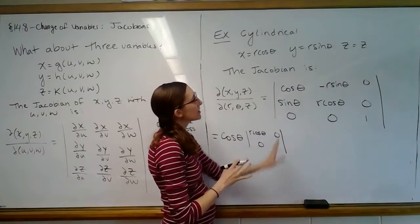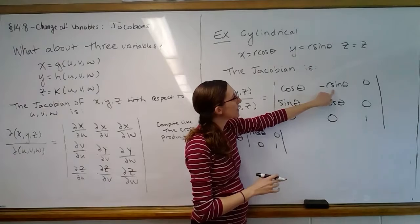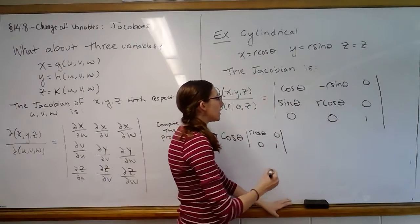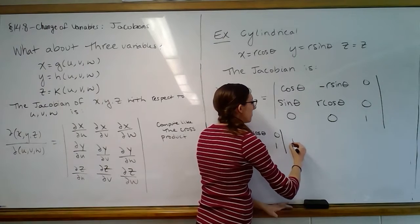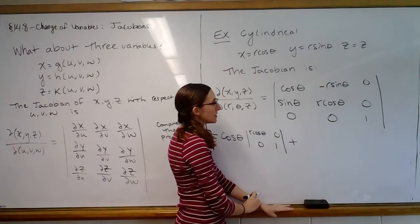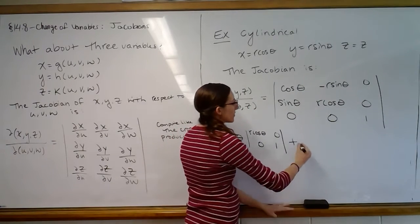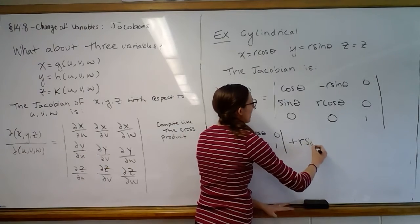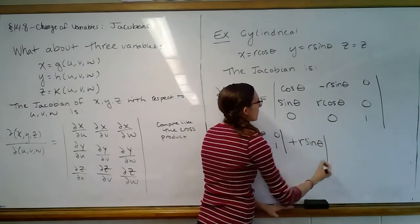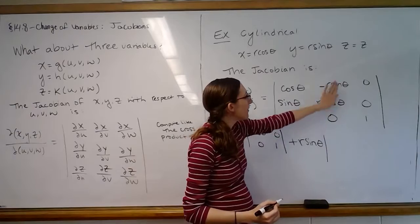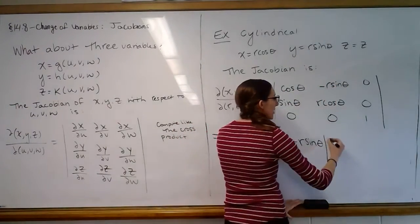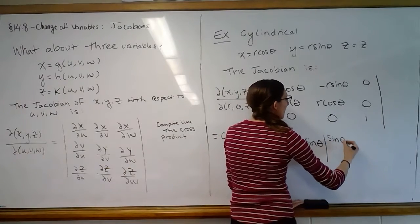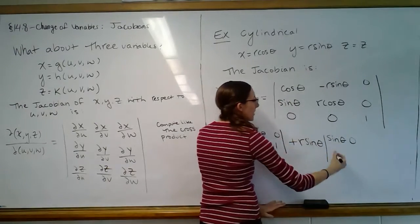We then move to the next column over. We take this top row, and we're going to do the negative of that, so it will really be plus, because it's minus the negative r. So it'll be plus r sine theta. And then when we do the little determinant crossing off that middle column and top row, we'll have sine theta, zero, and then zero, one.